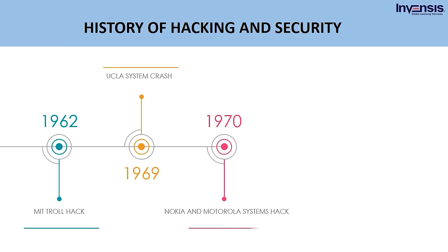In 1970, Nokia and Motorola were hacking victims when Kevin Mitnick broke into one of the world's most highly protected networks. He did this using social engineering methods — pretending to be insiders so that they would hand over passwords and codes — and then used the codes to access internal computer systems. He was one of the most wanted hackers of the time.